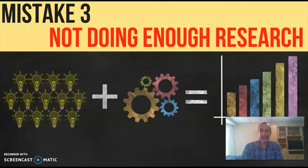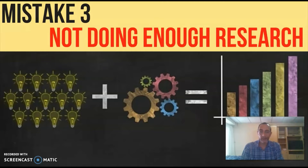Mistake number three is not doing enough research on the offer. To have a successful promo you must have a thorough understanding of the product that you're promoting. So either you get a review copy from the vendor or you just purchase the product. Then you want to study the pros and cons of the product so that you can pre-sell it better than most other affiliates who won't go the extra mile. A shallow understanding of the product will only lead to shallow promotional efforts and this will result in just a few sales or no sales at all.